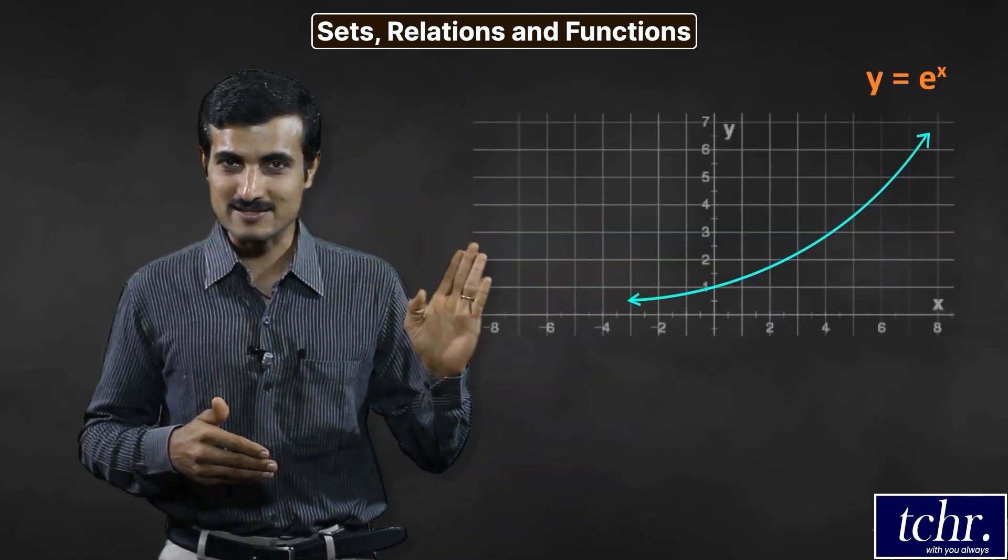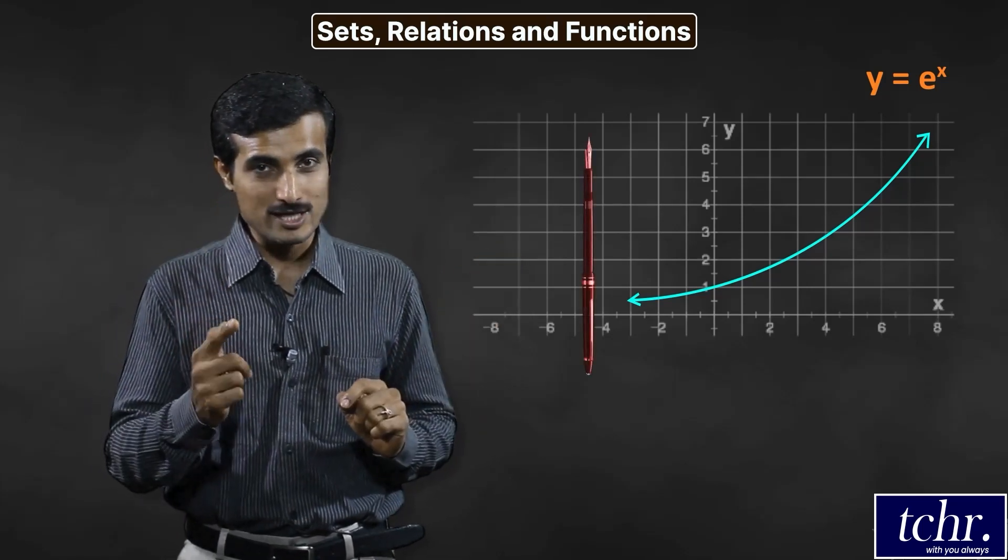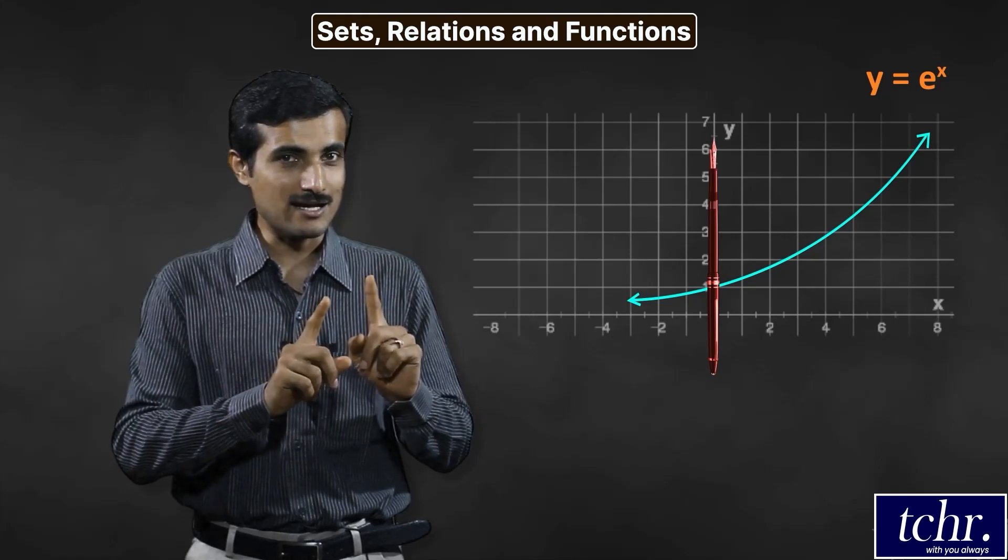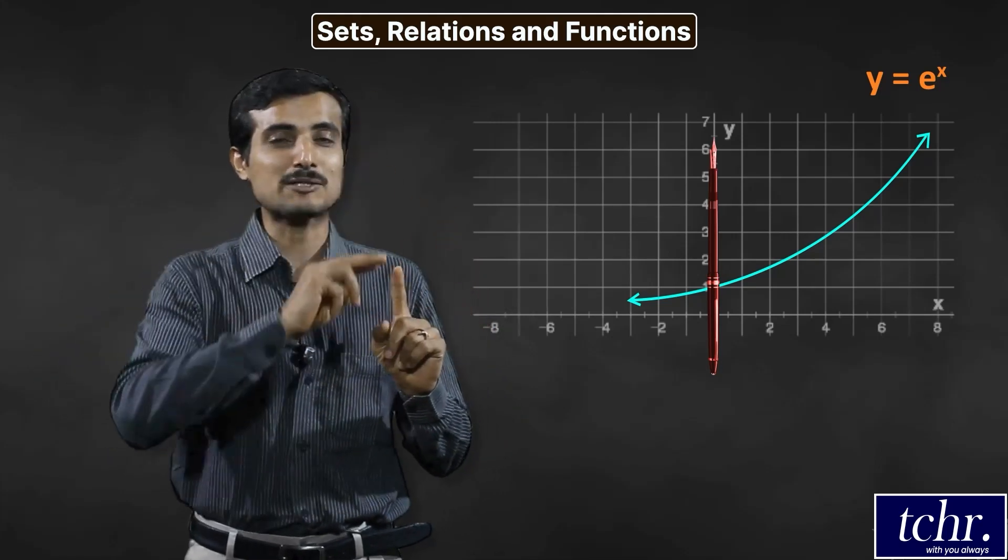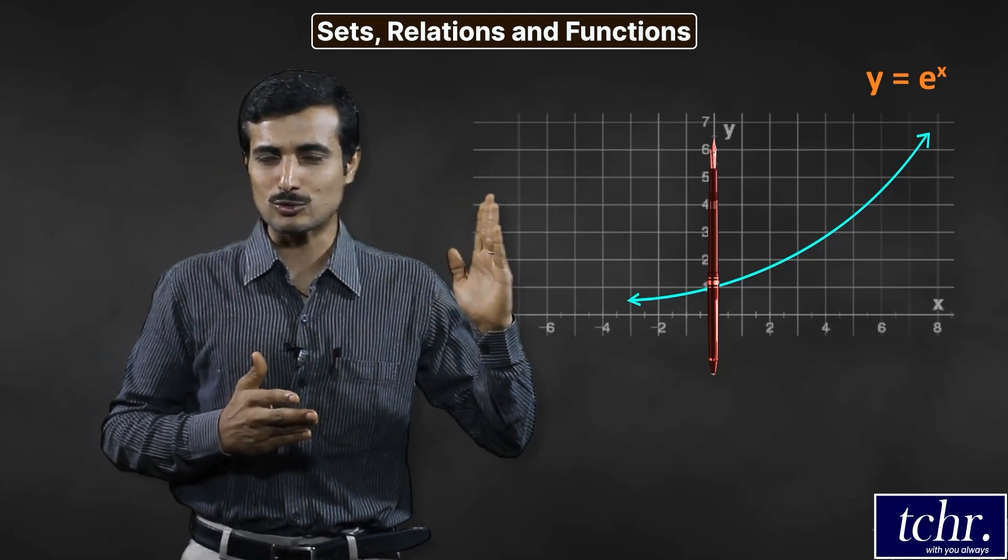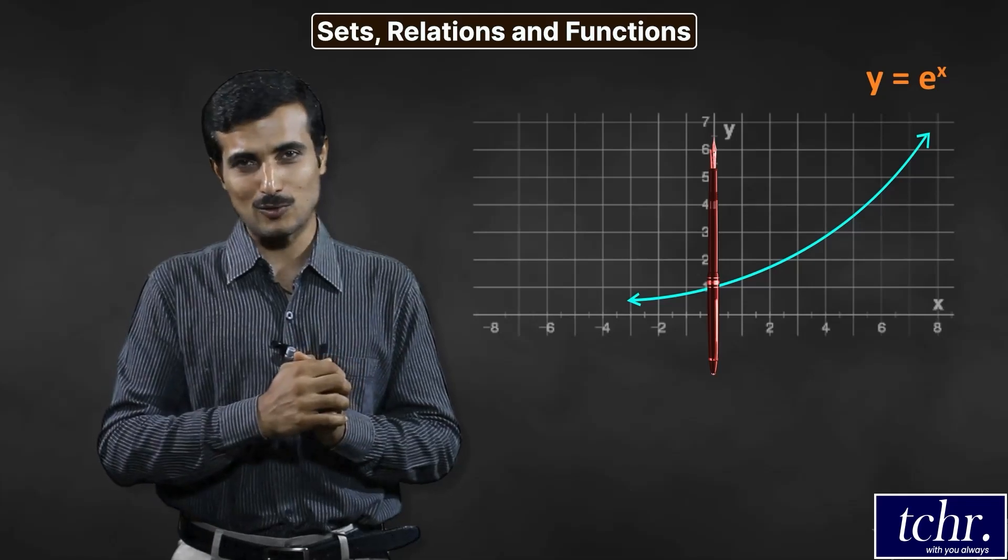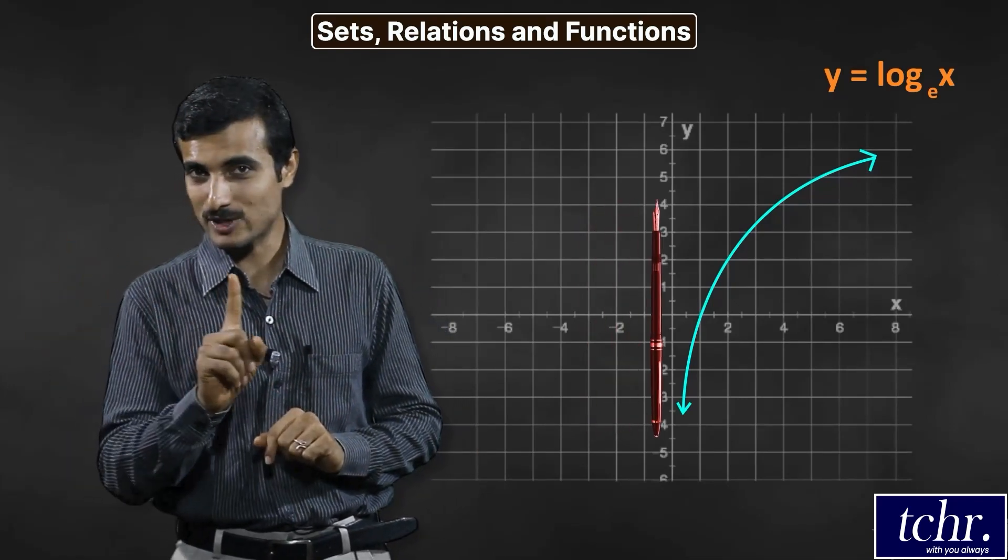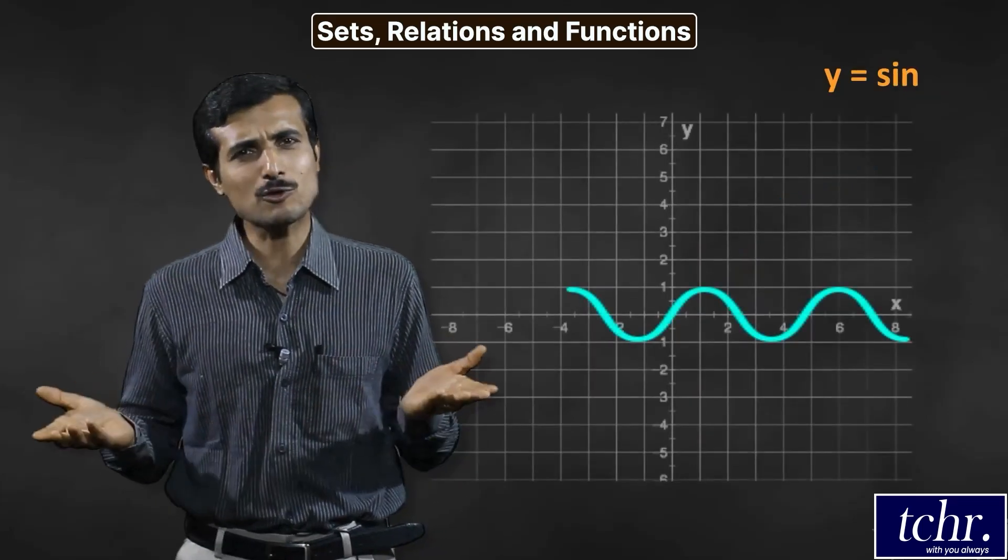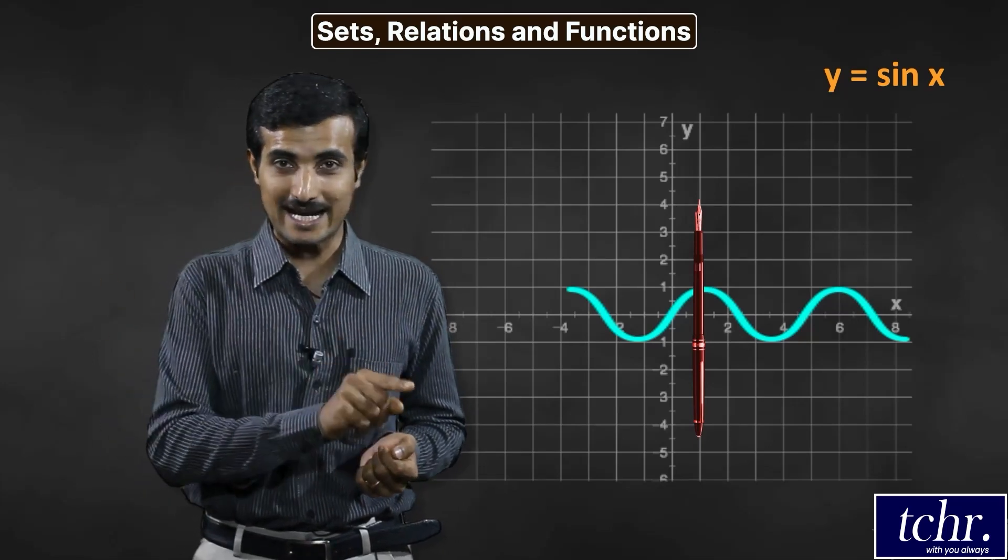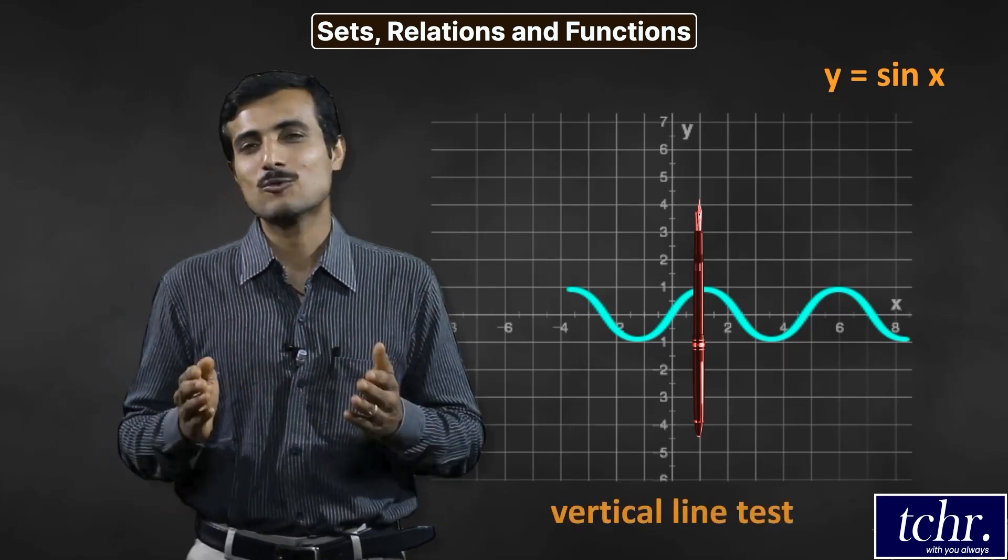This is the vertical line test. Look, y equals e power x is one function. Now I'm going to put the pen to the graph and move it. If you move wherever you move, that pen will be cut at one point. That is the function. Example, y equals log x. If you move here, pen will be cut at one point. This is called the vertical line test.